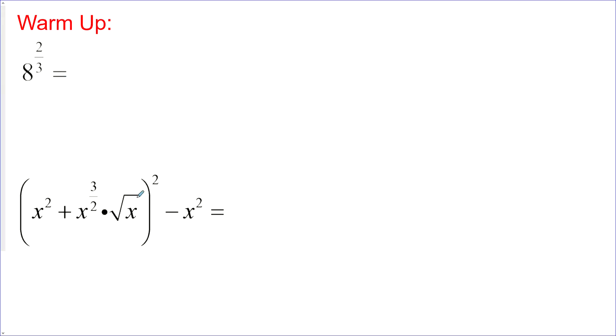And simplify these expressions. For this one, we could square the 8 first, and then take the cubed root. So, the denominator of the exponent is the index of the radical. Now, 8 squared is 64, and then we just need to do the cubed root of 64, which is 4.